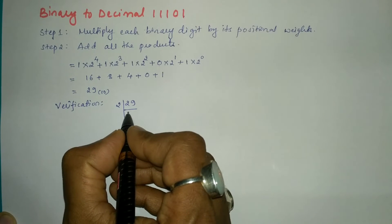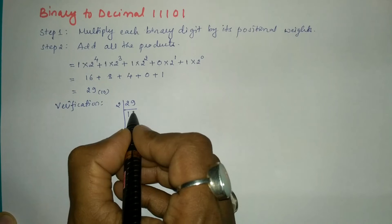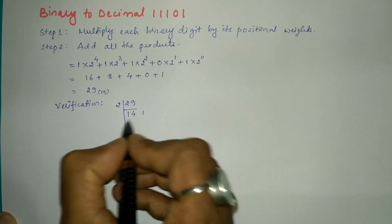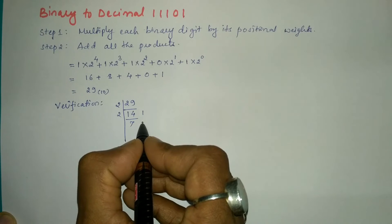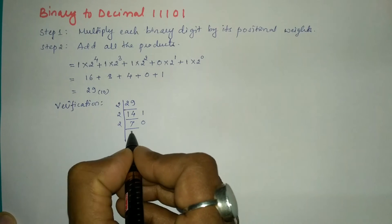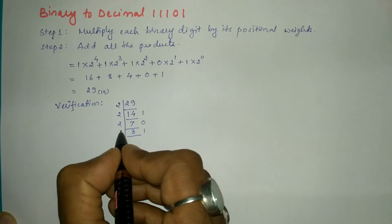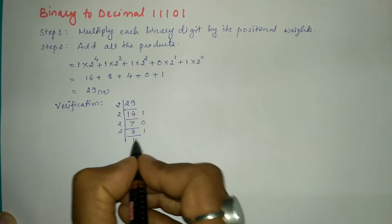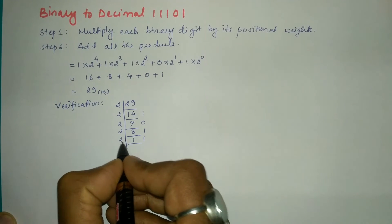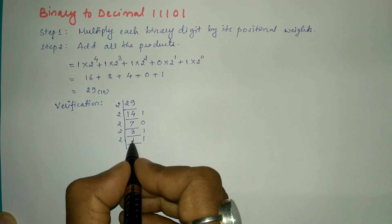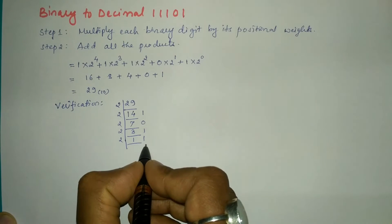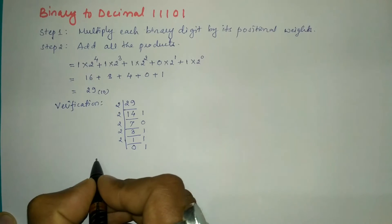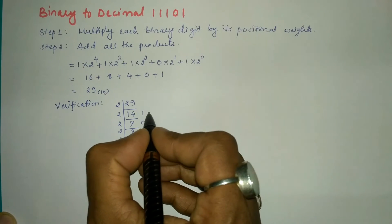Dividing 29 by 2: 2 × 14 = 28, remainder is 1. Then 14 ÷ 2: 2 × 7 = 14, remainder is 0. Then 7 ÷ 2: 2 × 3 = 6, remainder is 1. Then 3 ÷ 2: 2 × 1 = 2, remainder is 1. Then 1 ÷ 2: as per basic mathematical rule, when the numerator is less than the denominator, the numerator acts as the remainder and the quotient becomes 0.